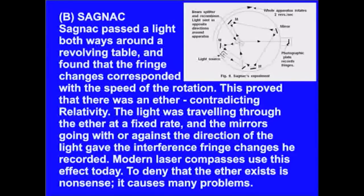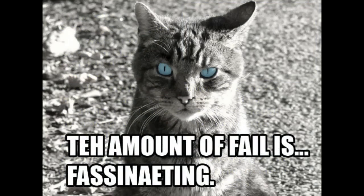Sagnac passed a light both ways around a revolving table, and found that the fringe changes corresponded with the speed of rotation. This proved that there was an ether, contradicting relativity. Um, in what universe? The light was traveling through the ether at a fixed rate. No, it was traveling at a fixed rate, period. That's the point. The mirrors, going with or against the direction of the light, gave the interference fringe changes he recorded. And these are always the same, regardless of how fast you're moving or in what direction. Again, that's the whole point. Modern laser compasses use this effect today. Right, because once they're calibrated to point in a certain direction, the fact that the speed of light is constant is what keeps them pointing in that direction. You're citing an example of how the non-existence of the ether is used for practical purposes, as evidence of its existence.